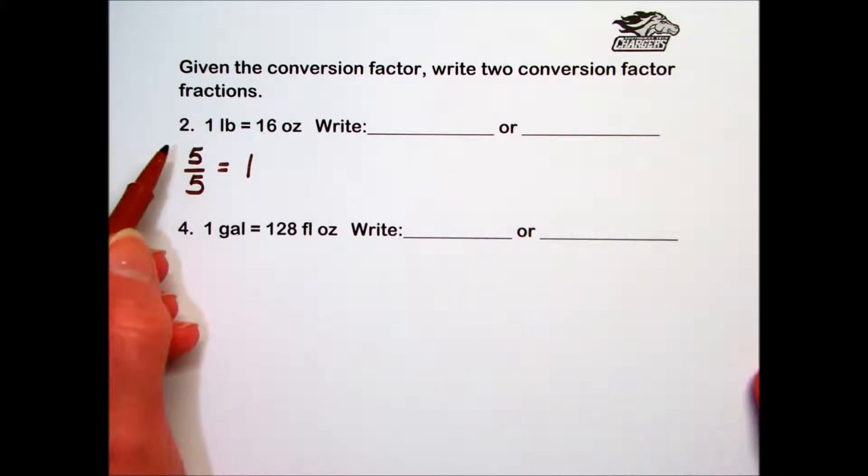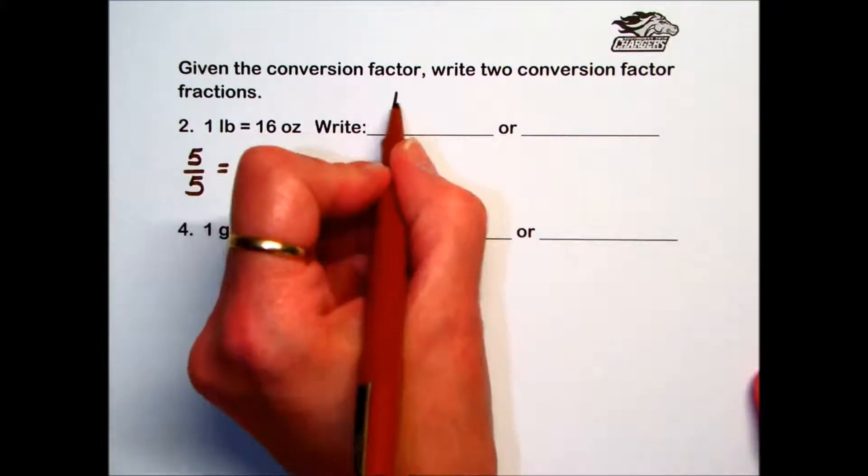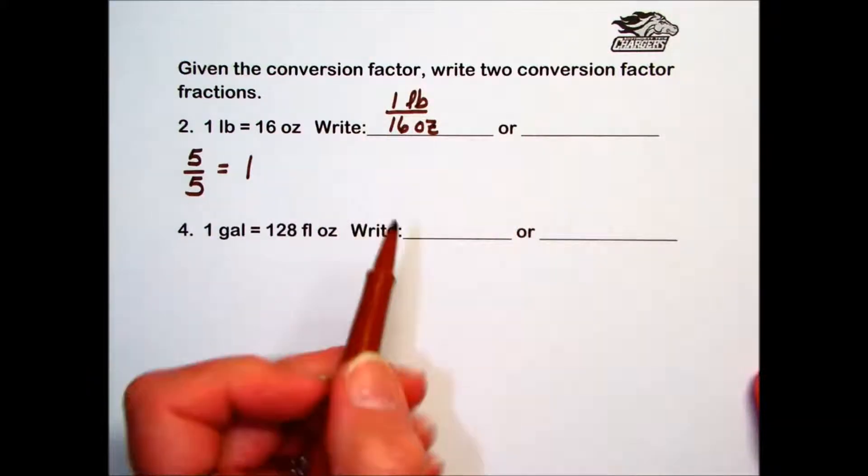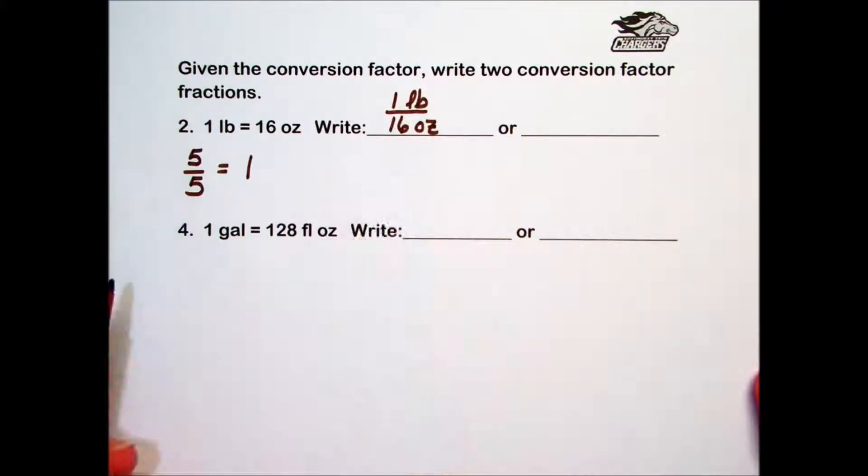And likewise, even though they don't look the same, when I write 1 pound over 16 ounces, I have created a special 1, which is a conversion factor fraction.